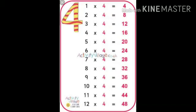Seven fours are twenty-eight. Eight fours are thirty-two. Nine fours are thirty-six. Ten fours are forty. Eleven fours are forty-four. Twelve fours are forty-eight.